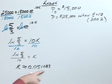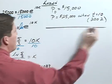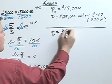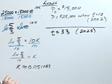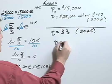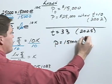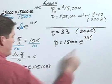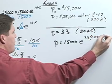Now that I know my constant, I can use that to find the value when t equals 33, as that would be the year 2025. Doing so, I would have p equals 15,000 e to the 33 times k, which in this case is 0.051083.